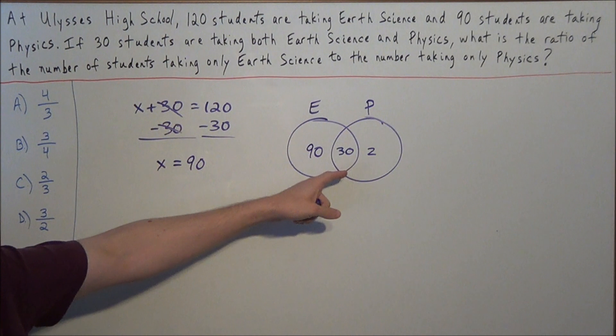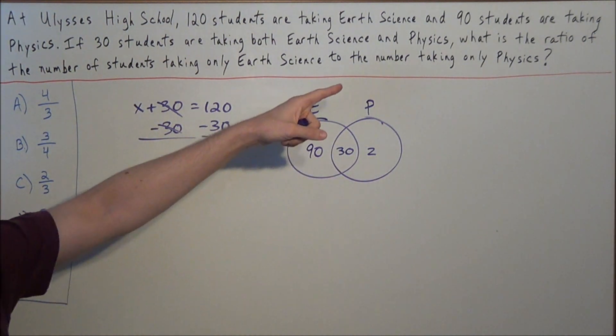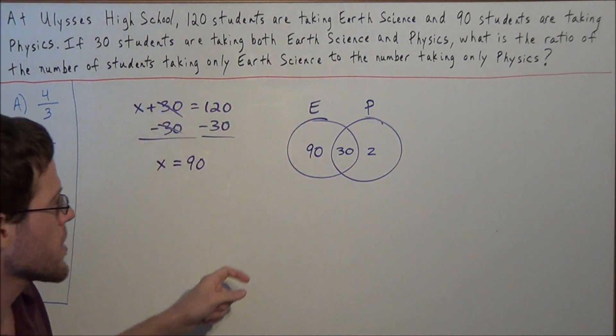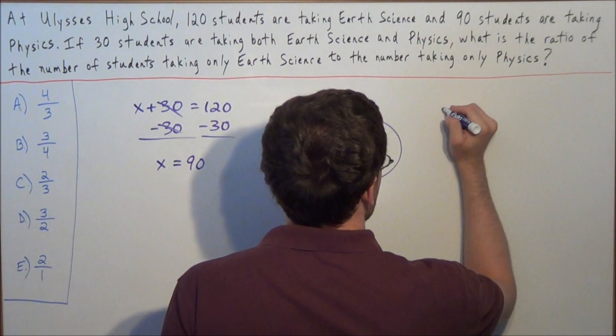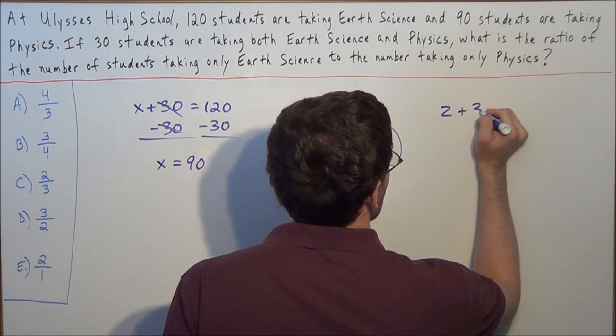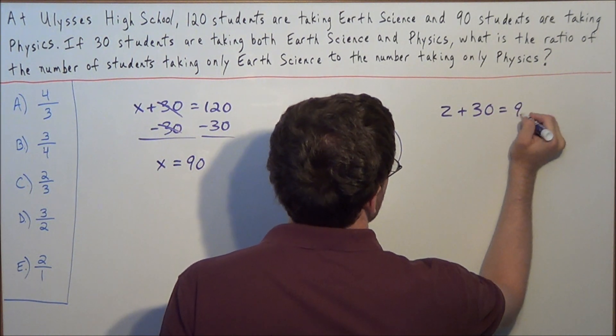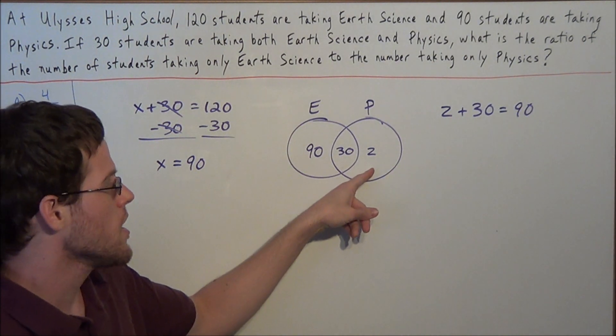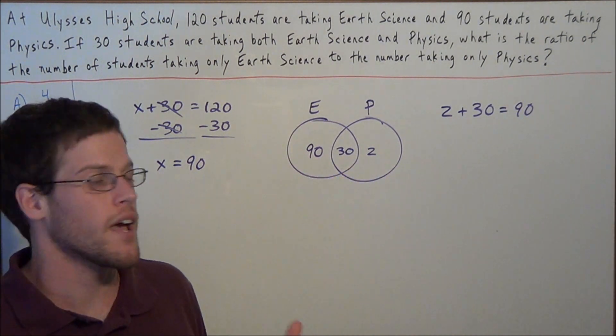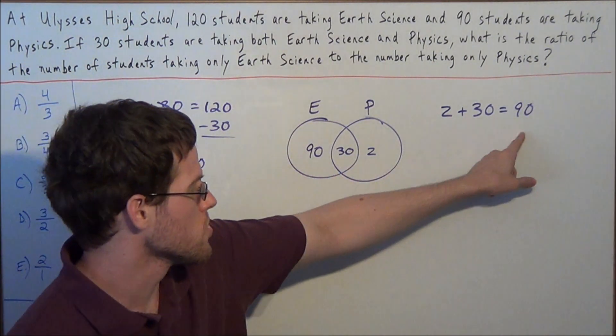So now to solve for Z, we're going to do something very similar. We're told that 90 students are taking Physics. So we can set up the equation Z plus 30 equals 90. Because once again, remember, the number of students taking Physics is made up of the students taking only Physics, and the students taking both Physics and Earth Science. So this equation holds.